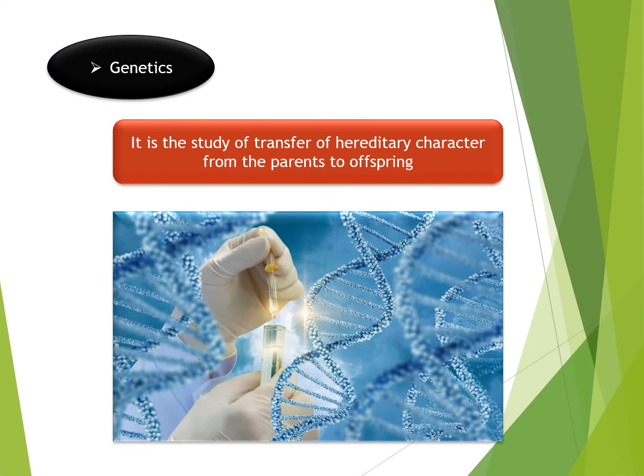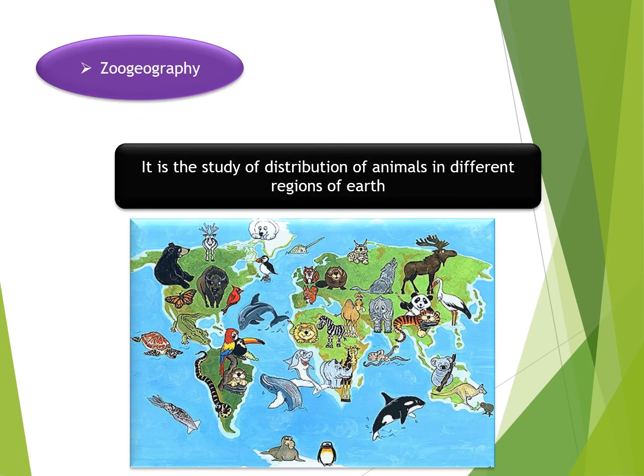Next is genetics — the study of the transfer of hereditary characters from parents to offspring. After that is zoogeography — the study of the distribution of animals in different regions of the earth.